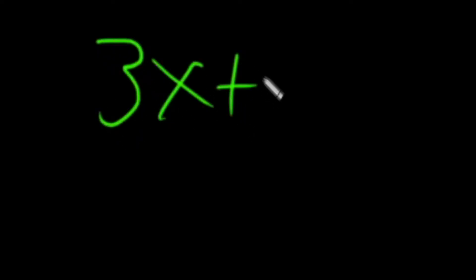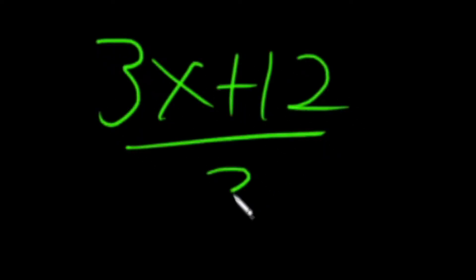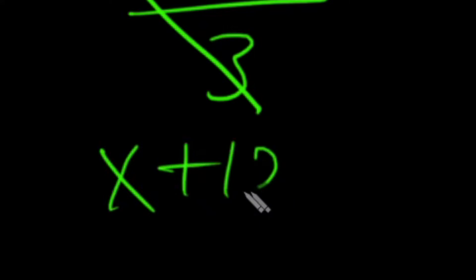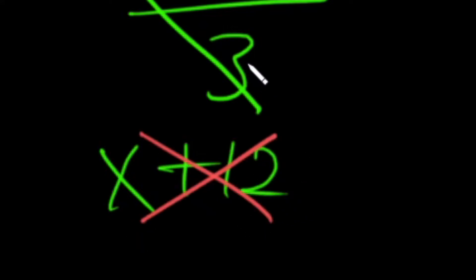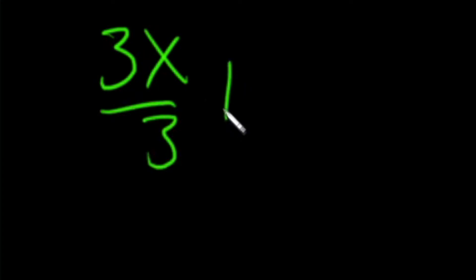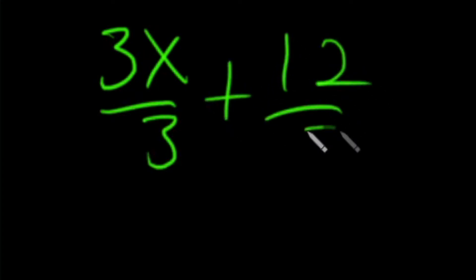Number 5. Say we have 3x plus 12 divided by 3, and we need to simplify. First thought may be to cross out the threes, and we're left with x plus 12, right? Nope. Instead, the 3 in the denominator needs to divide into both parts of the numerator. So we can split up the fraction and make it look like this: 3x over 3 plus 12 over 3.